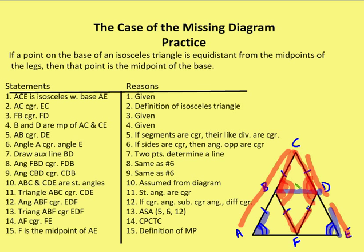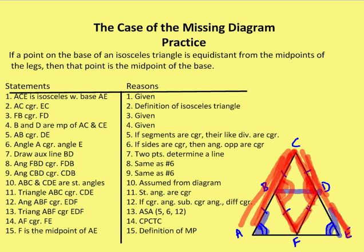Moving to step 10, angles ABC and CDE are straight angles — assumed from the diagram — so they're congruent. Then angle ABF is congruent to EDF because if I subtract CBF from ABC and CDF from CDE, my results are two congruent angles. If congruent angles are subtracted from congruent angles, their differences are congruent. So angle ABF is congruent to angle EDF.